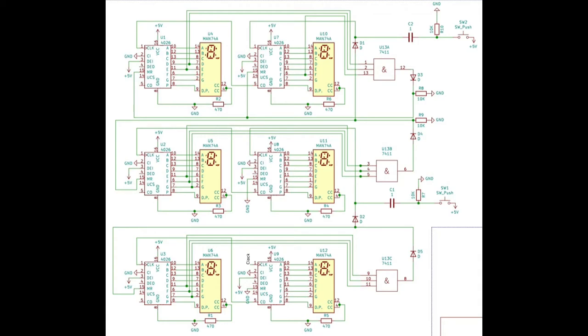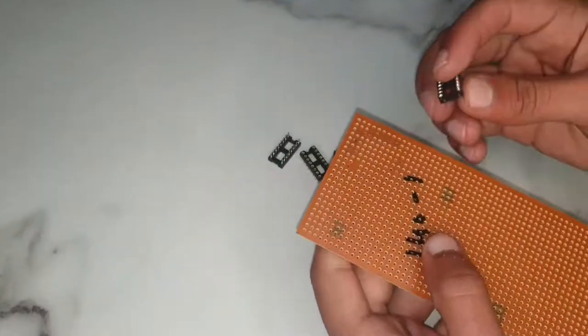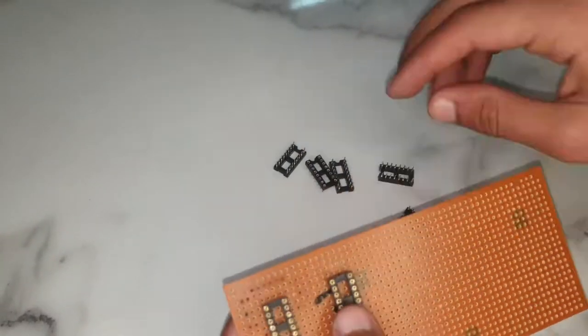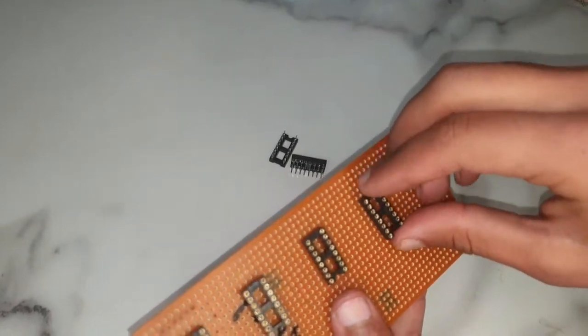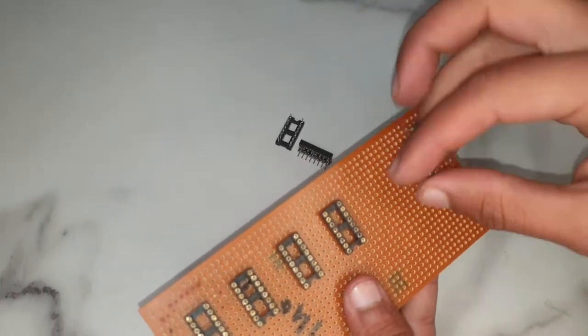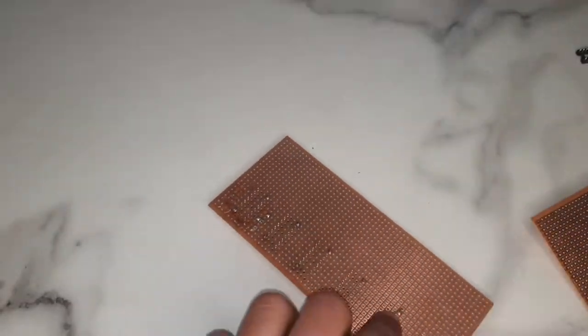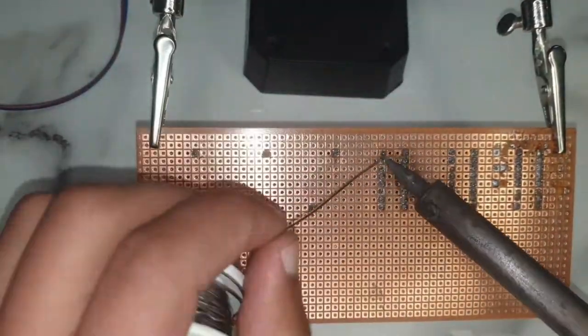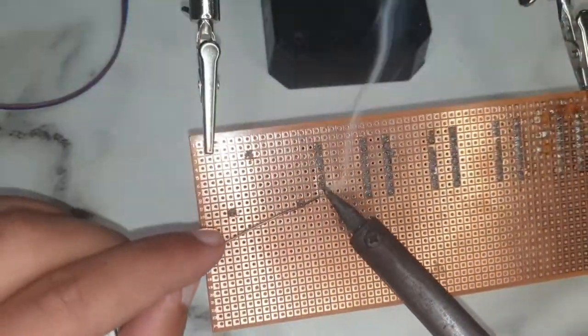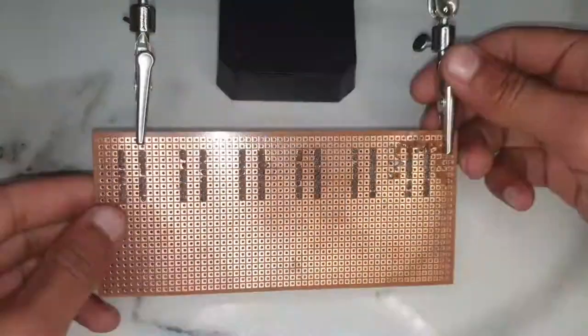You will find a link for this diagram in the description. Now we will make this circuit on a PCB board with the help of the diagram. Carefully place the bases of our ICs on the PCB board and solder them carefully. Use the soldering iron as it is very hot.